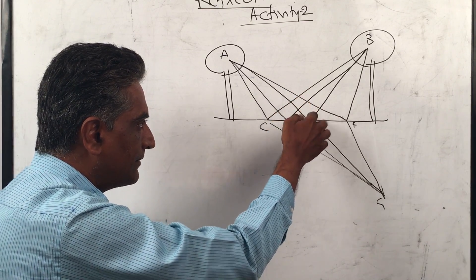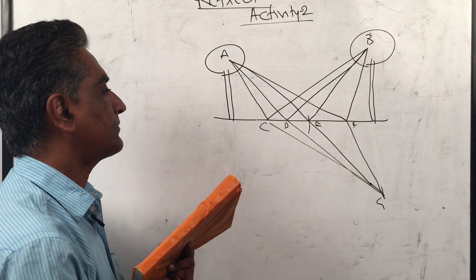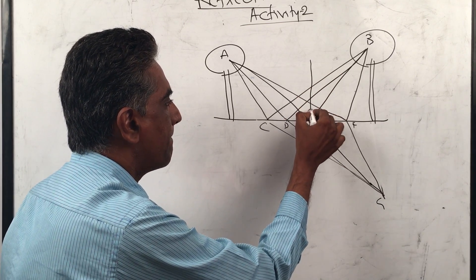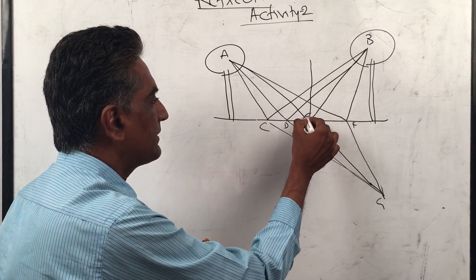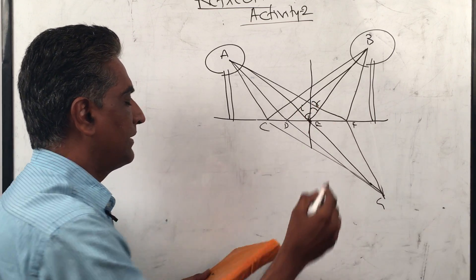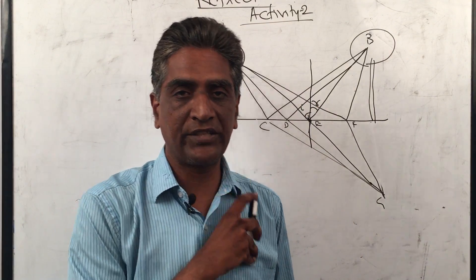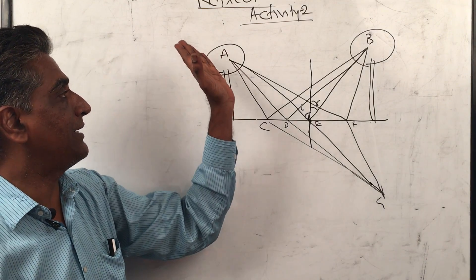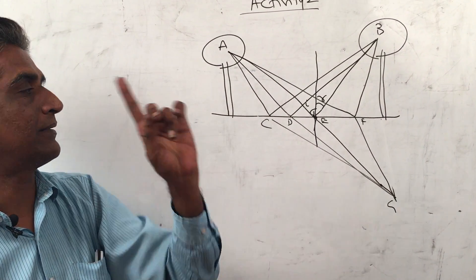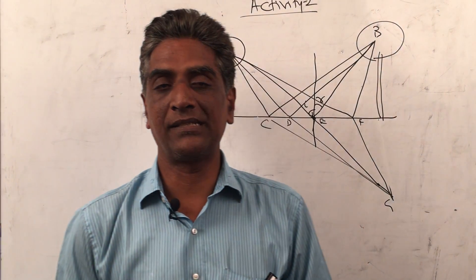If you take a perpendicular here, this angle is equal to this angle. That is how we have the angle of incidence is equal to angle of reflection. By what principle? That the light chooses that path. It always travels that path which takes the least distance.